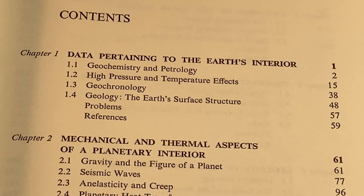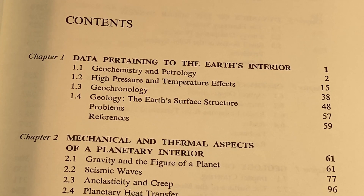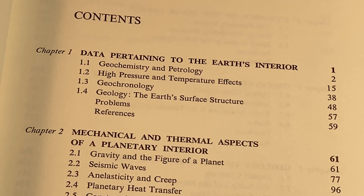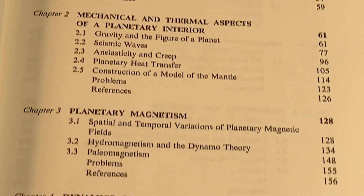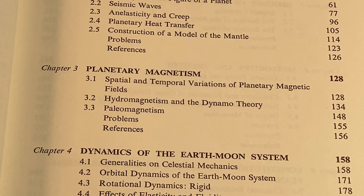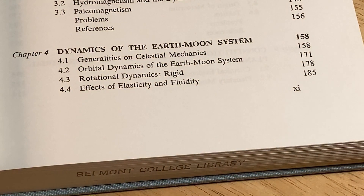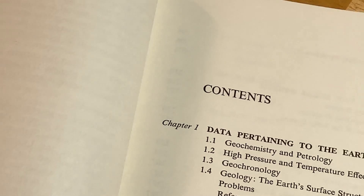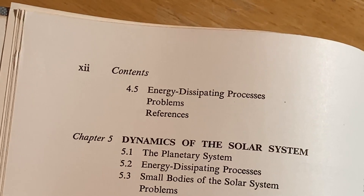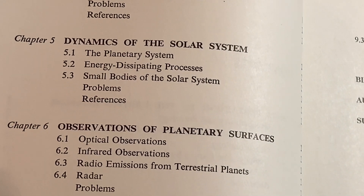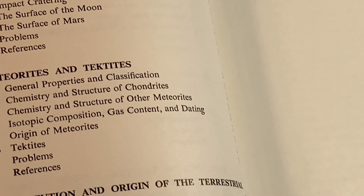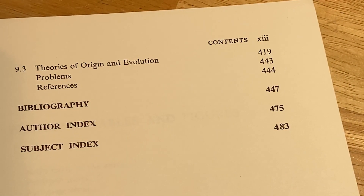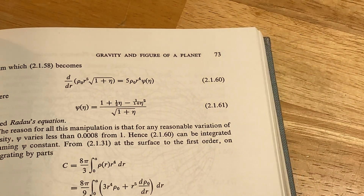And here are the topics so you can see what the book contains. Chapter one is on data pertaining to the Earth's interior. Chapter two is on mechanical and thermal aspects of a planetary interior. Chapter three is on planetary magnetism. And chapter four is on the dynamics of the Earth-Moon system. Let's go to the next page so you can see the rest of the contents.